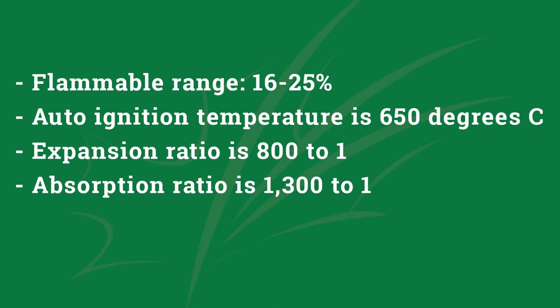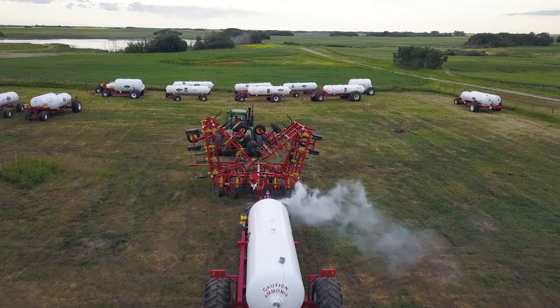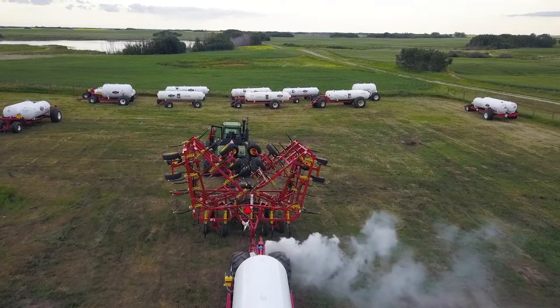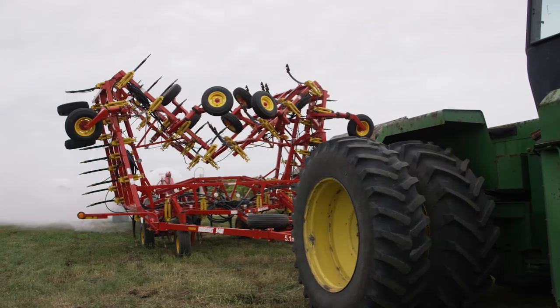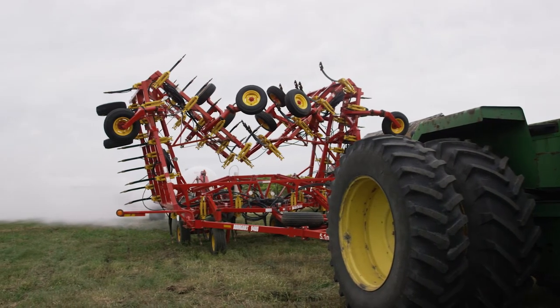The expansion ratio is 800 to 1, meaning that one liter of liquid anhydrous ammonia will form 800 liters of vapor. The absorption ratio is 1,300 to 1, meaning that 1,300 liters of ammonia vapor will dissolve in one liter of water. The vapor density is 0.71 grams per liter at 25 degrees Celsius, meaning that it is slightly lighter than air. Thus, in normal conditions, a vapor cloud of ammonia will move with the wind and dissipate quickly. However, with high humidity, the vapor will take on moisture and could settle and linger in low-lying areas.